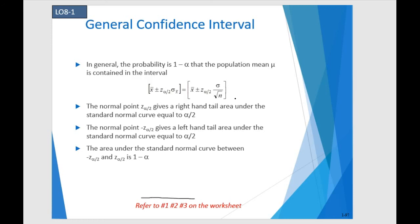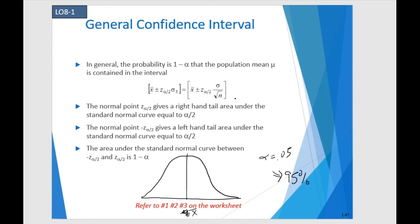We have our standard normal curve — let's pretend that it's symmetrical and normal. We're going to call the center x-bar, not mu. We want to make a confidence interval with a certain alpha. Let's call alpha 0.05, which implies we're going to have 95% confidence. So this 0.05 is the probability that we're wrong — 95% probability that we're right.